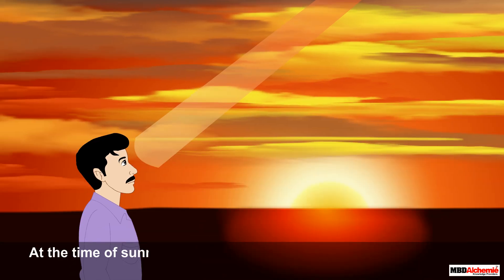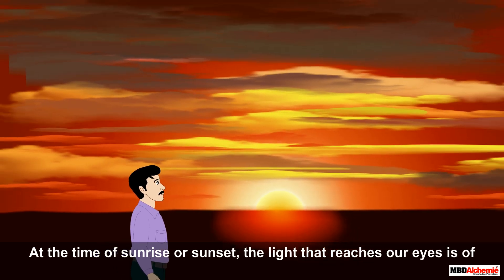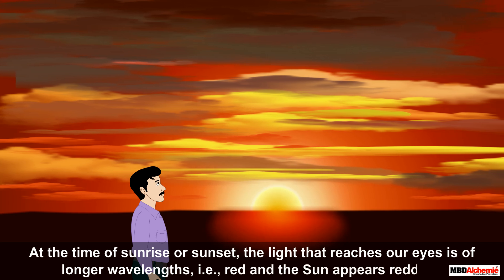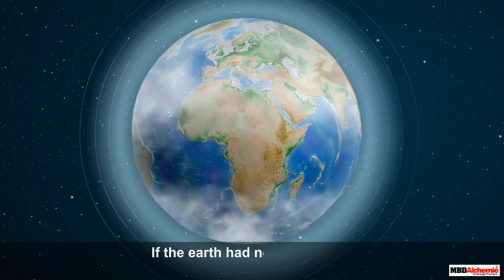Thus, at the time of sunrise or sunset, the light that reaches our eyes is of longer wavelengths, that is, red, and the sun appears reddish. It will be interesting to know that if the Earth had no atmosphere, there would not have been any scattering.